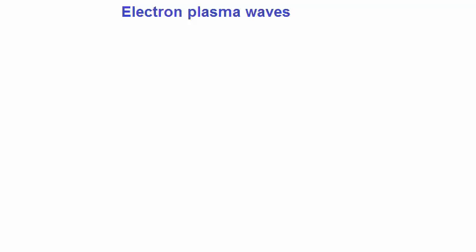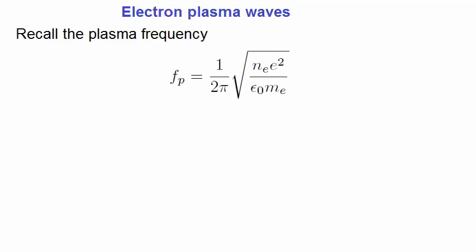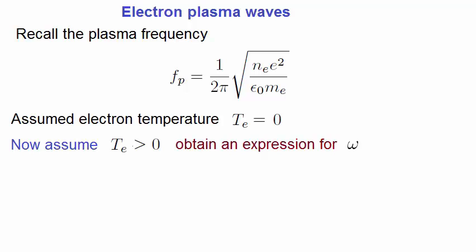We're going to look at plasma waves that are generated because we assign electrons a temperature. Recall the plasma frequency from a previous lecture. In deriving this, we assumed that the electron temperature is zero. We now assume that the temperature is greater than zero, and obtain an expression for the angular frequency Omega. We go through the same procedure that we did in obtaining the plasma frequency.